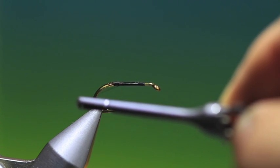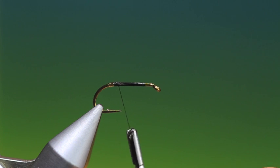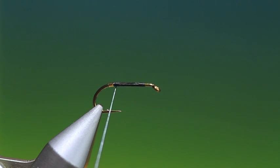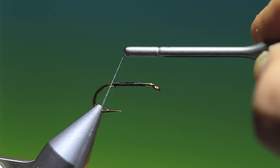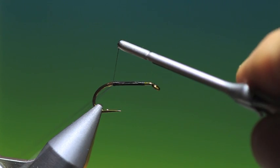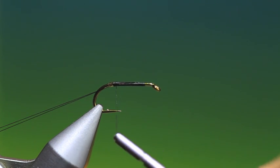Now what we want is we need to make a dubbing loop with our tying thread, just there. We can hang that out the way now. That's for securing or for making the peacock hurl body more robust afterwards.